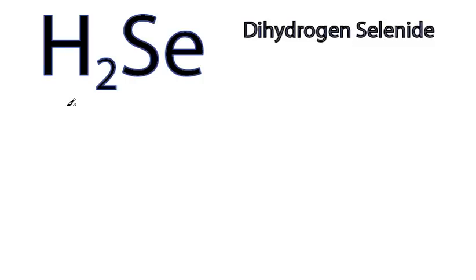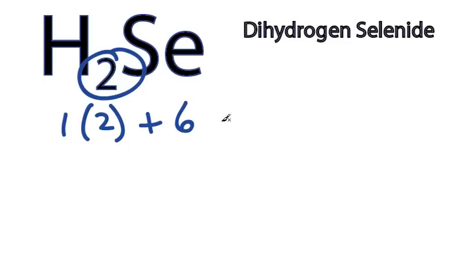On the periodic table, hydrogen is in group 1, so it has 1 valence electron. But we have 2 of them, so we're going to multiply it by 2. Plus Se is in group 6, or 16. It has 6 valence electrons. We have a total of 8 valence electrons that we're going to work with here.